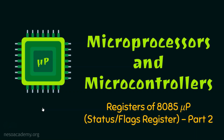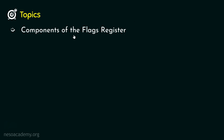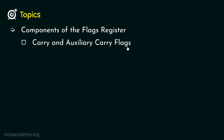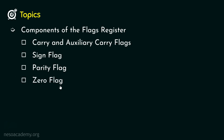Hello everyone and welcome back to the series on registers of the 8085 microprocessor — status or flags register. Today we are in part 2. Without any further ado, let's get to learning. Coming to the topics we are going to cover in this session: in the previous session we were introduced to the components of the flags register. Today, we are going to cover all of the components, starting with the carry and the auxiliary carry flags, thereafter the sign flag, then the parity flag, and finally the zero flag.